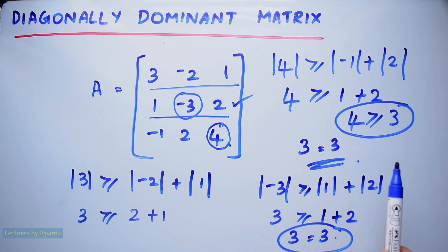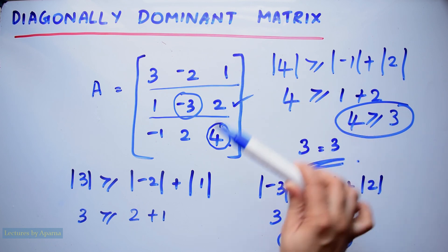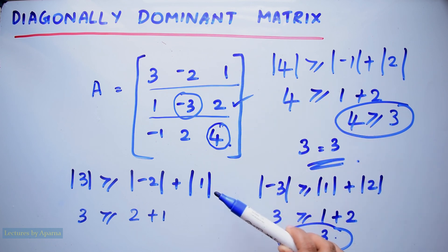Since the condition has been satisfied in all three rows, we can say that this matrix is a diagonally dominant matrix. This is how you check if a matrix is a diagonally dominant matrix.